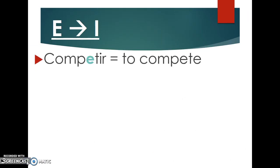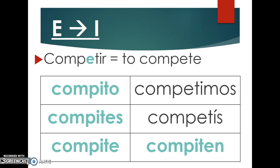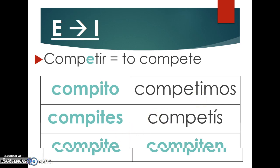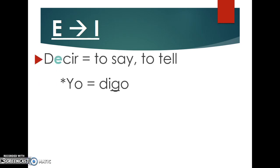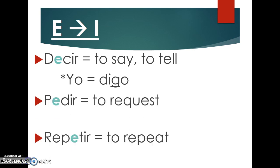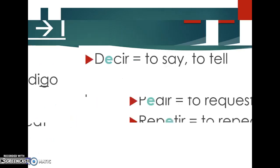The next category is E to I stem changers. An example is 'competir,' which means 'to compete.' It conjugates as: compito, compites, compite, competimos, competís, compiten. Listen for the difference — in 'compito' you hear the I, while in 'competimos' you hear the E. Additional E to I verbs include: decir (to say/tell — also a go verb: digo), pedir (to request), repetir (to repeat), and servir (to serve).